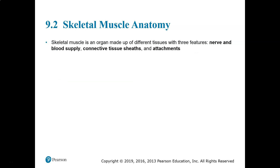Skeletal muscle is an organ, so it's made up of different tissues. It has epithelial tissue, connective tissue, muscle tissue, and nervous tissue found within it. It has a nerve supply and a blood supply, and it has connective tissue sheaths that connect different muscle fibers together to form a muscle, as well as attachments from the muscle to the bone.